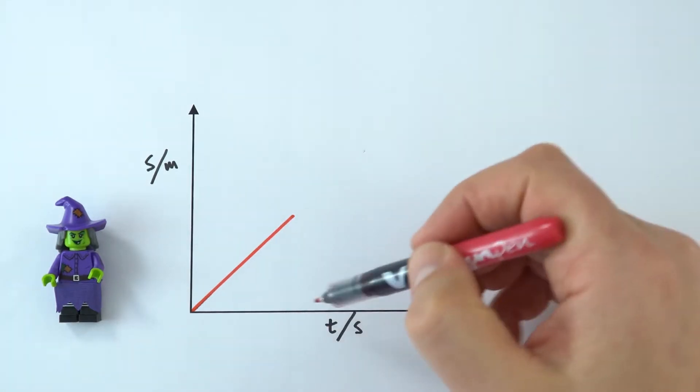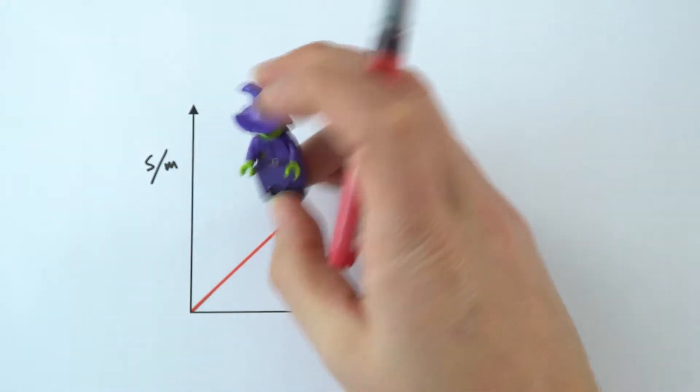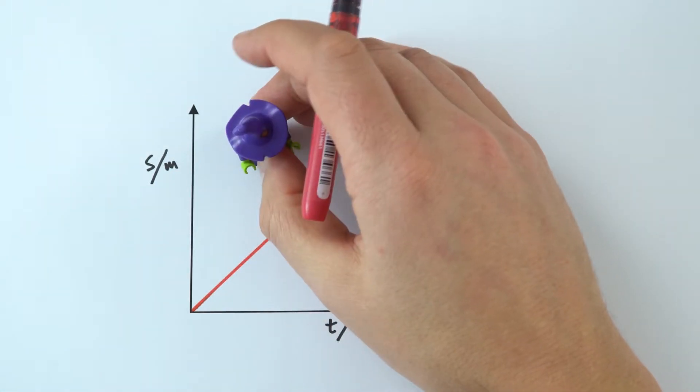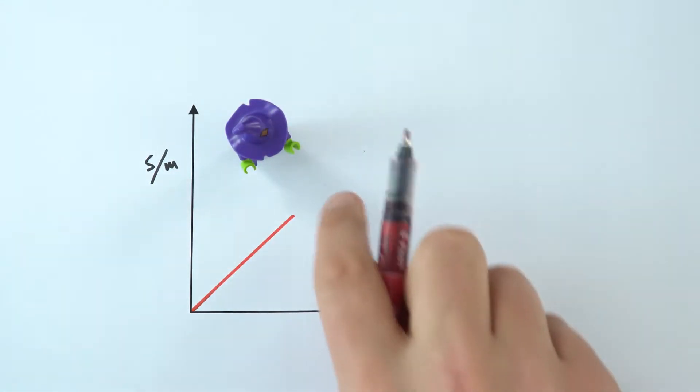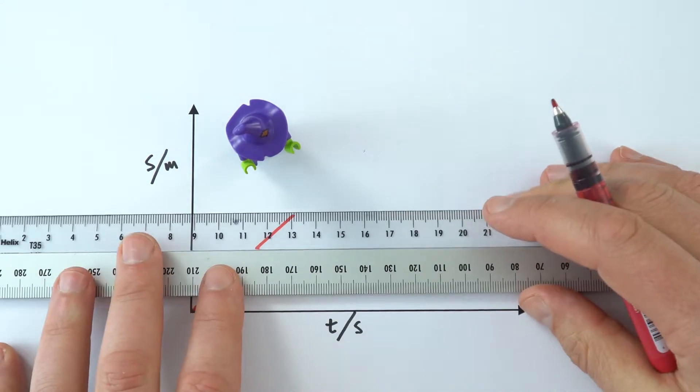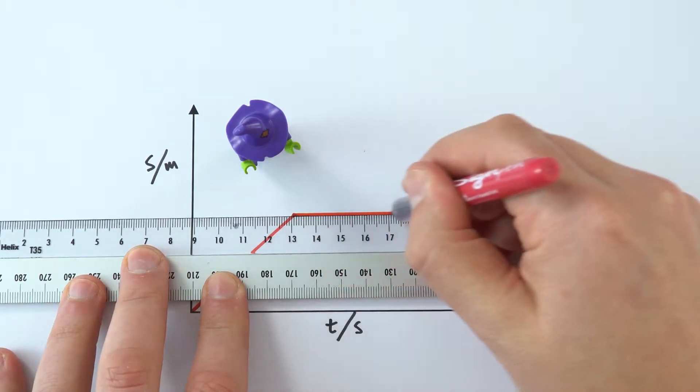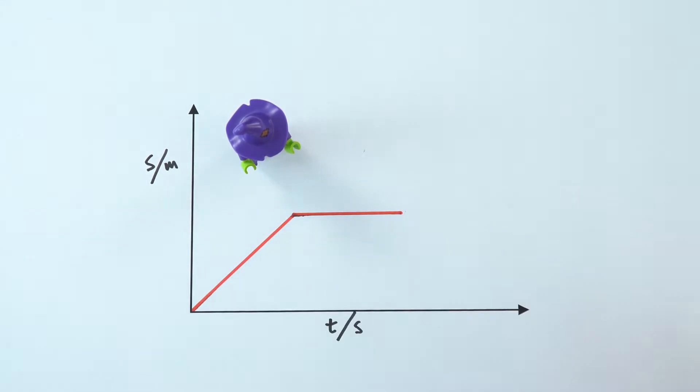Effectively, the longer they walk for, the bigger the distance that they've travelled. So that's them when they're moving. But if they then stay completely stationary, and they're still, every second the distance that they travel doesn't increase. So we could then maybe record this, and we'd find that over time their distance doesn't increase, but the time does. And we have a flat straight line on the graph.